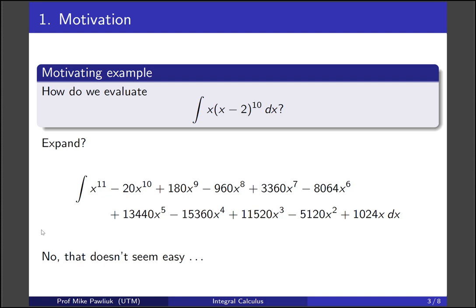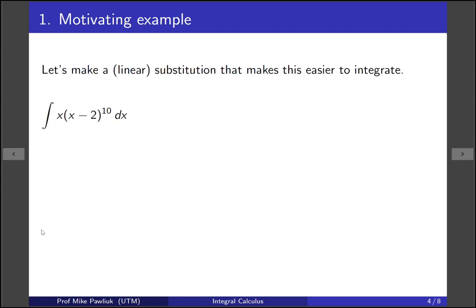Let's see if we can find something simpler by first making a linear substitution. So we'll start with the same integral and this time we'll get rid of this x minus 2. So that's going to be our main substitution, u is x minus 2. It's called a linear substitution because this is of the form mx plus b. The m is 1 and the b is minus 2.